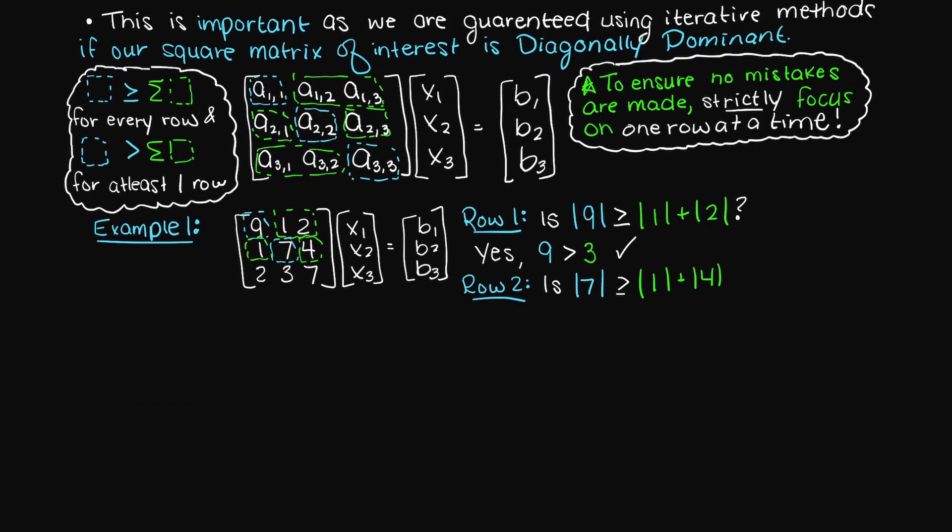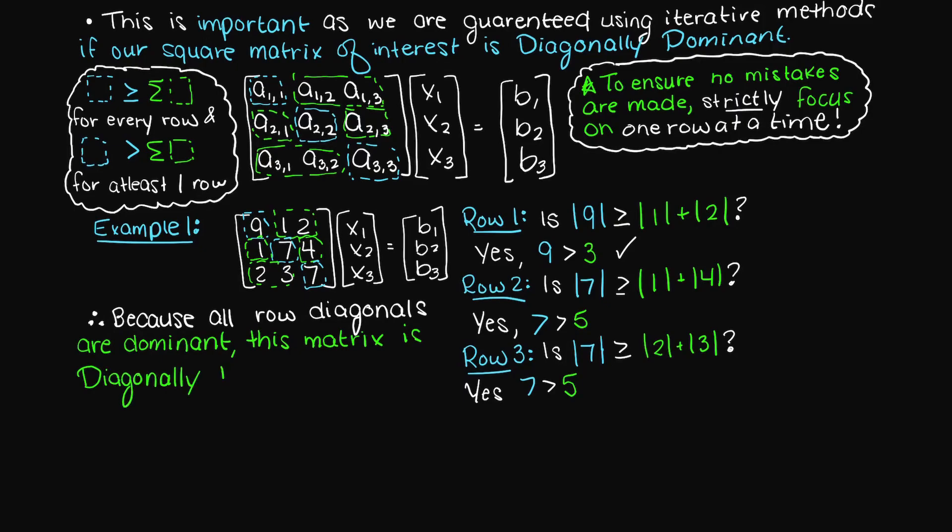Therefore we can move on to the next row. And again with rows two and three our diagonal elements are indeed dominant. Therefore since all the rows passed our test this matrix is diagonally dominant.